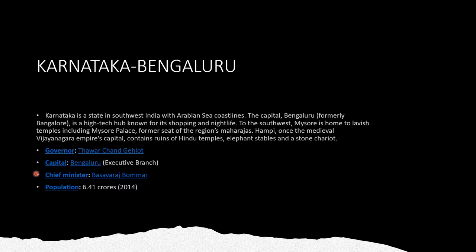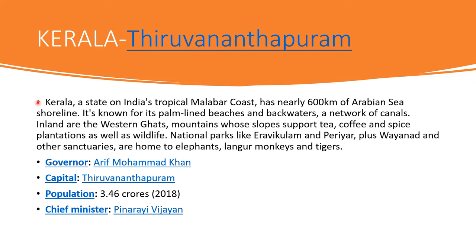The chief minister is Basavaraj Bommai and the population is 6.41 crores in 2014. The next one is Kerala and its capital is Thiruvananthapuram. Kerala, a state on India's tropical Malabar coast, has nearly 600 km of Arabian Sea shoreline. It is known for its palm-lined beaches and backwaters, a network of canals. Inland are the Western Ghats mountains, whose slopes support tea, coffee and spice plantations as well as wildlife. National parks like Eravikulam and Periyar, Wayanad and other sanctuaries are home to elephants, langur monkeys and tigers. Kerala's governor is Arif Mohammad Khan, its capital is Thiruvananthapuram, population is 3.46 crores in 2018, and the chief minister is Pinarayi Vijayan.